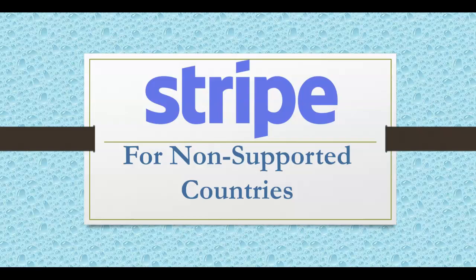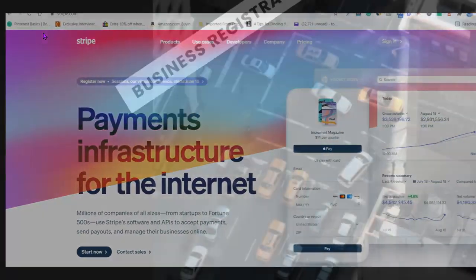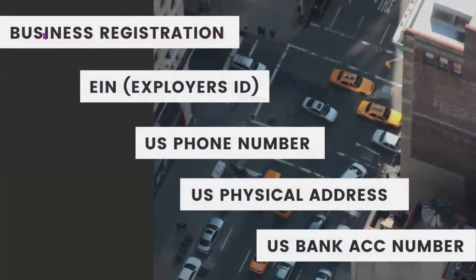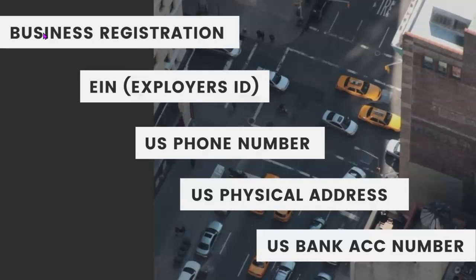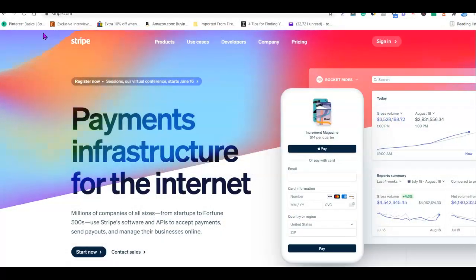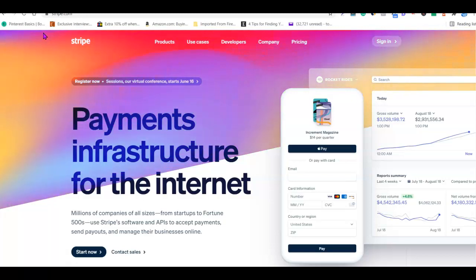All right guys, so for us to successfully create a Stripe account, a couple of things we're going to need: first, we need to have our business incorporated in the United States — that is, registered in the US. Then after that, request our personal US tax identity number, also known as an EIN. Other things we need include a US phone number, a US physical address, and a US bank account number to withdraw money from our Stripe account.